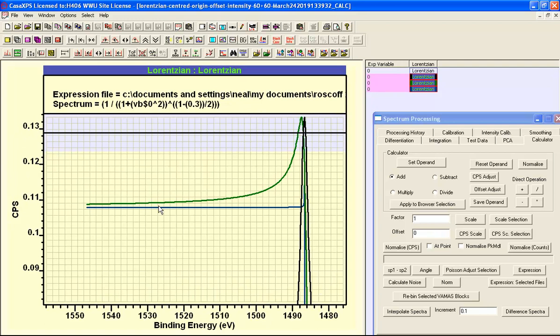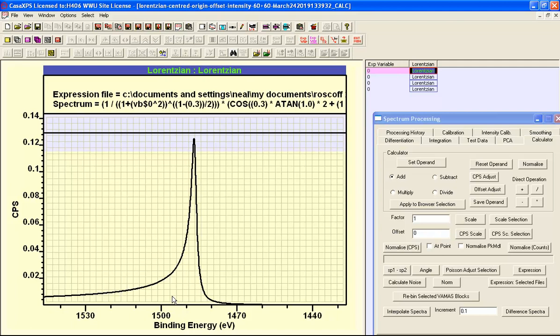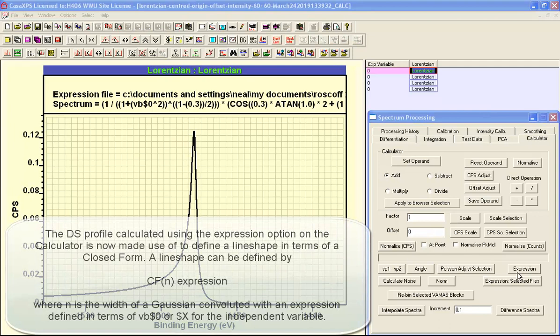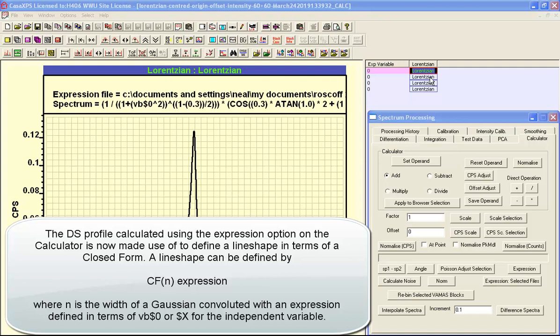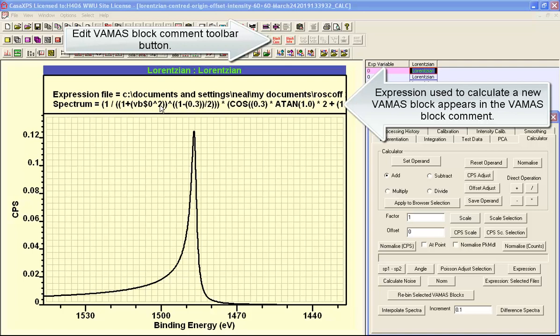This is why the integral from 0 to minus infinity, the area in that portion of a DS line shape, is infinite. That's why it's very difficult to make use of this when calculating intensities for XPS peaks. When the expression calculator is used to create a new VAMAS file, the VAMAS block comment includes the expression that was used to create these data.